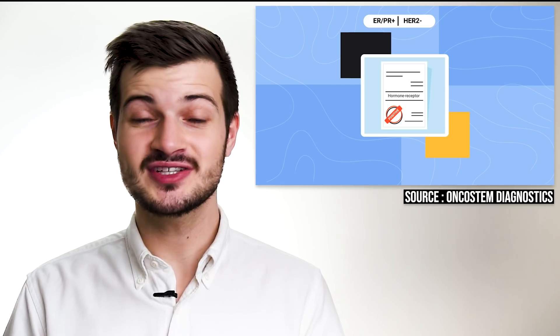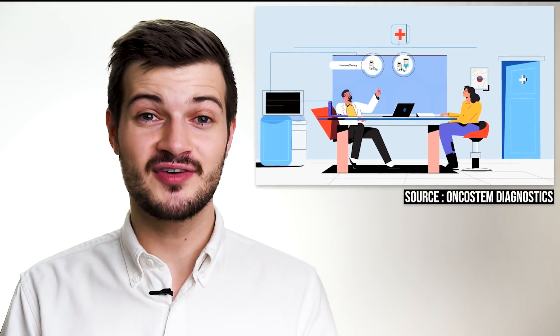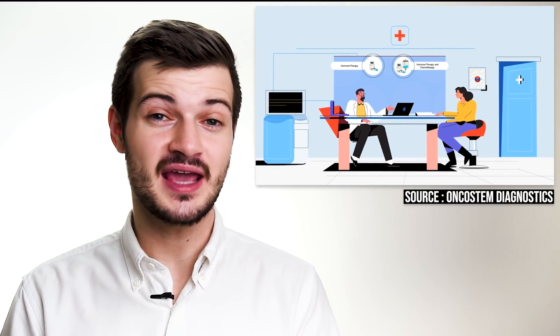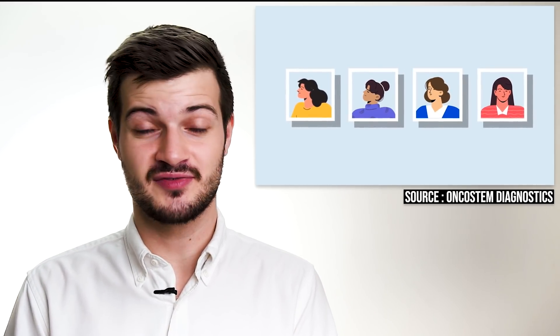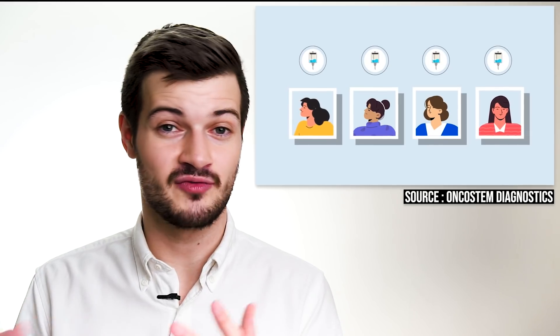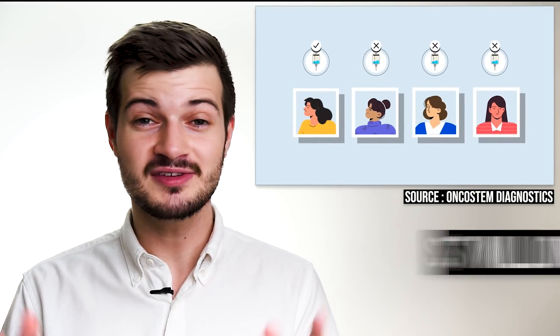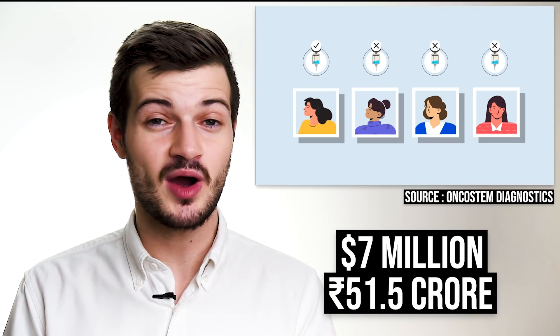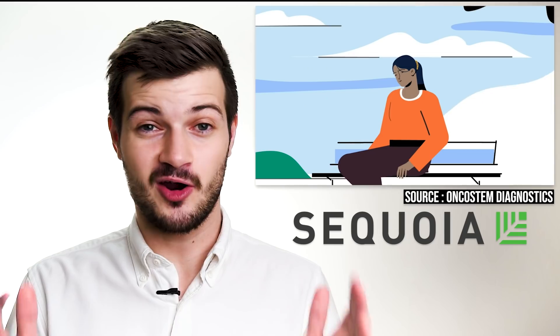These suggestions help patients to better understand the potential for distant recurrence, as well as the benefits and risks of chemotherapy and hormonal therapy. The startup is also working on developing tests for other types of cancer like oral cancer and ovarian cancer. So far, Oncostem Diagnostics has raised a total of $7 million, that's 51.5 crore rupees, from investors like Sequoia Capital and Artiman Ventures.